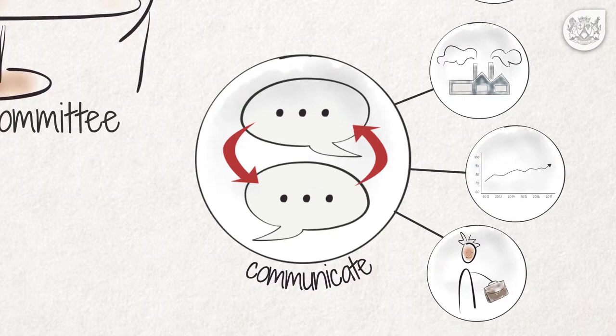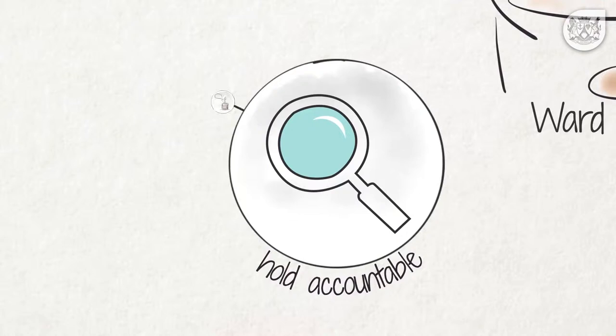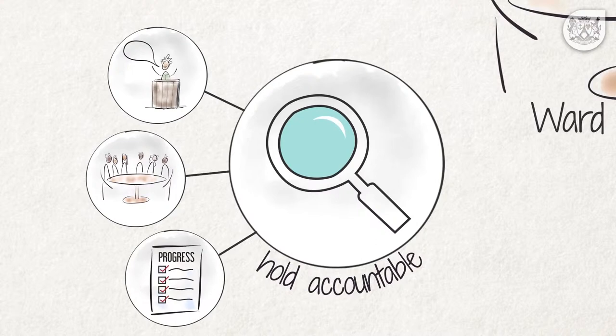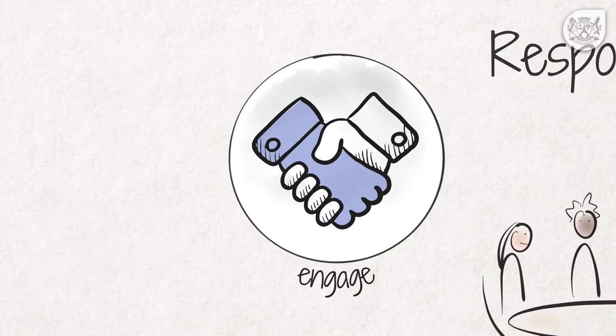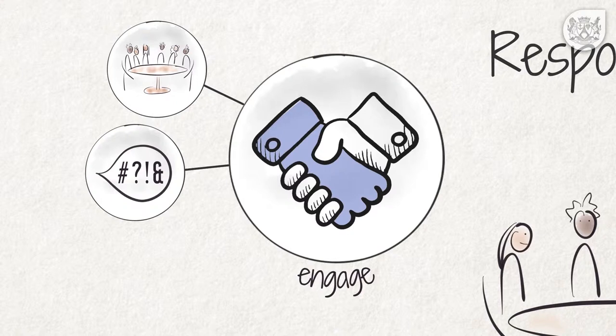Thirdly, the ward committee can hold the ward councillor accountable on his election promises, his attendance of meetings and progress made. Fourthly, ward committee members should engage with the community through regular meetings, attend to grievances and complaints, and door-to-door interactions.